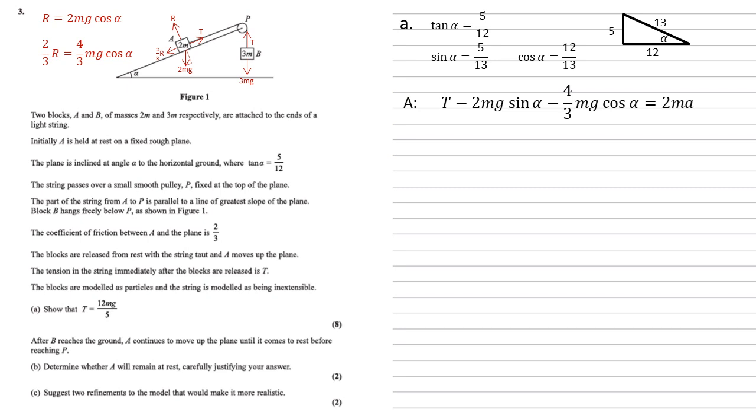We now know that sin alpha is 5 thirteenths and cos alpha equals 12 thirteenths. So putting these in, we get that T minus 10 thirteenths mg minus 16 thirteenths mg equals 2ma, which gives us T minus 2mg equals 2ma.